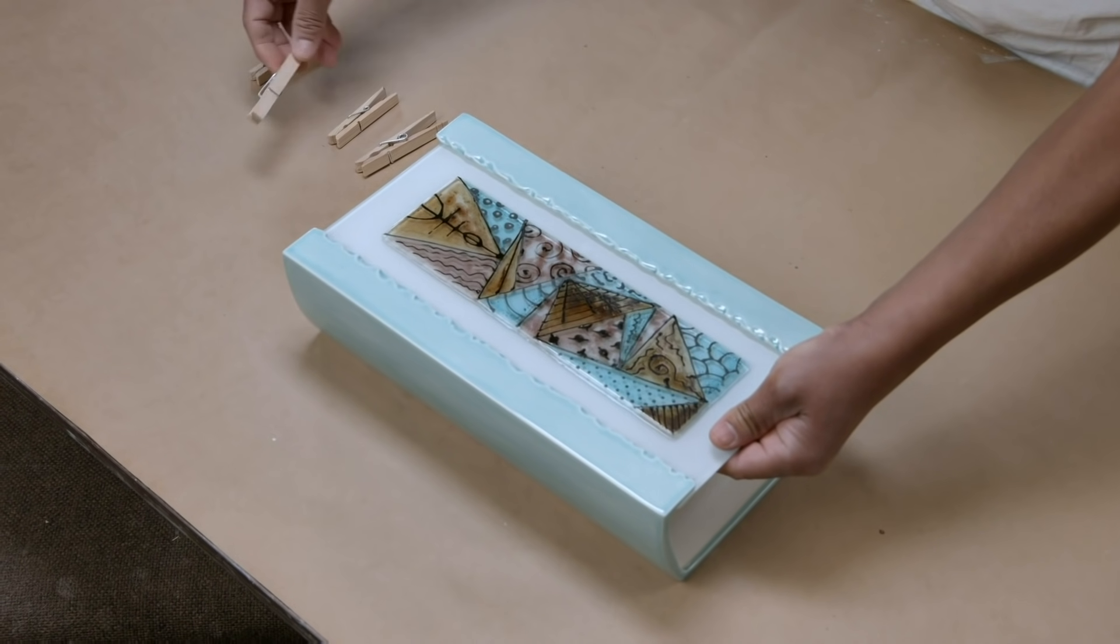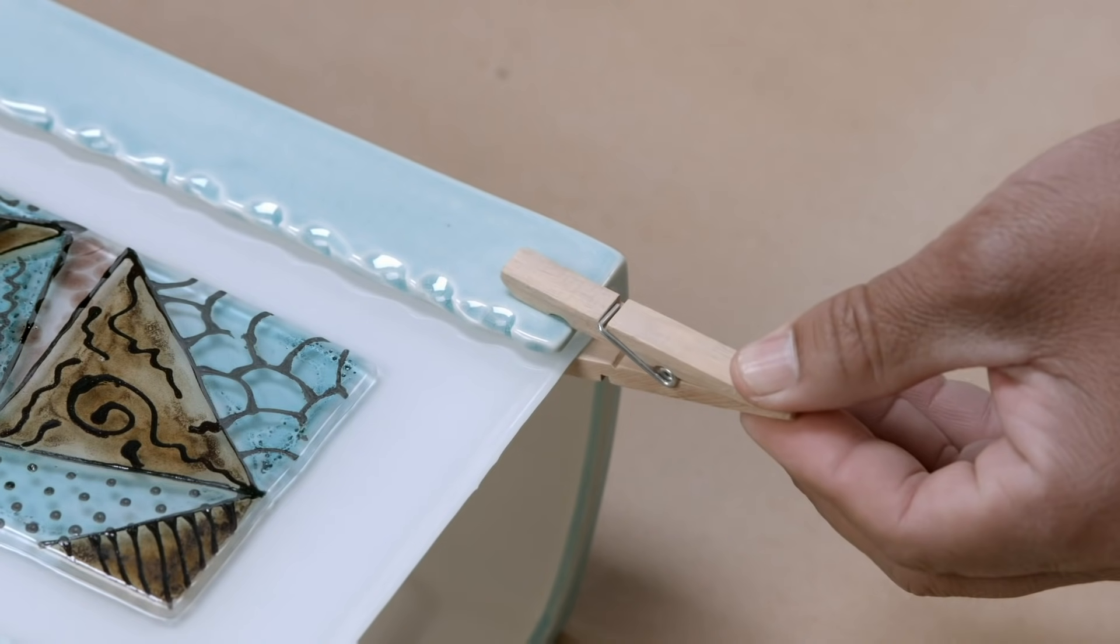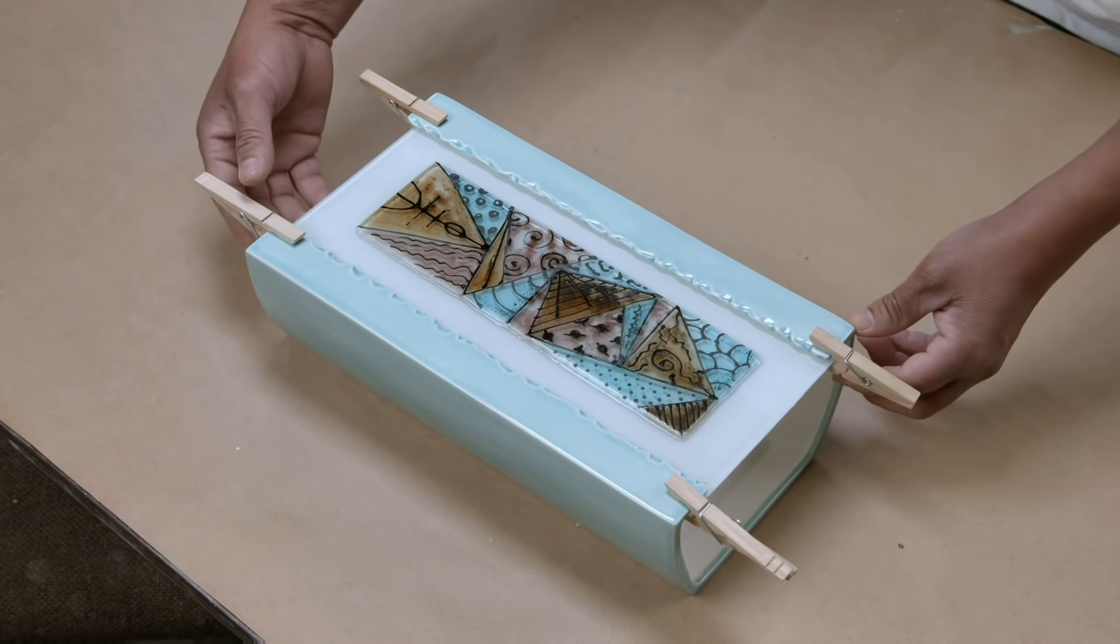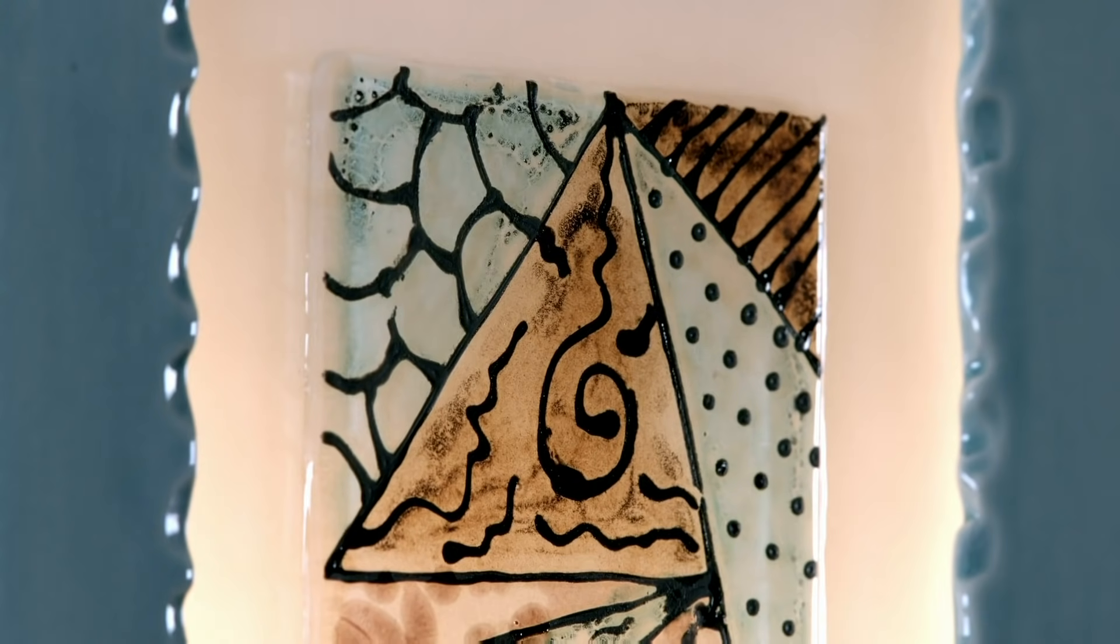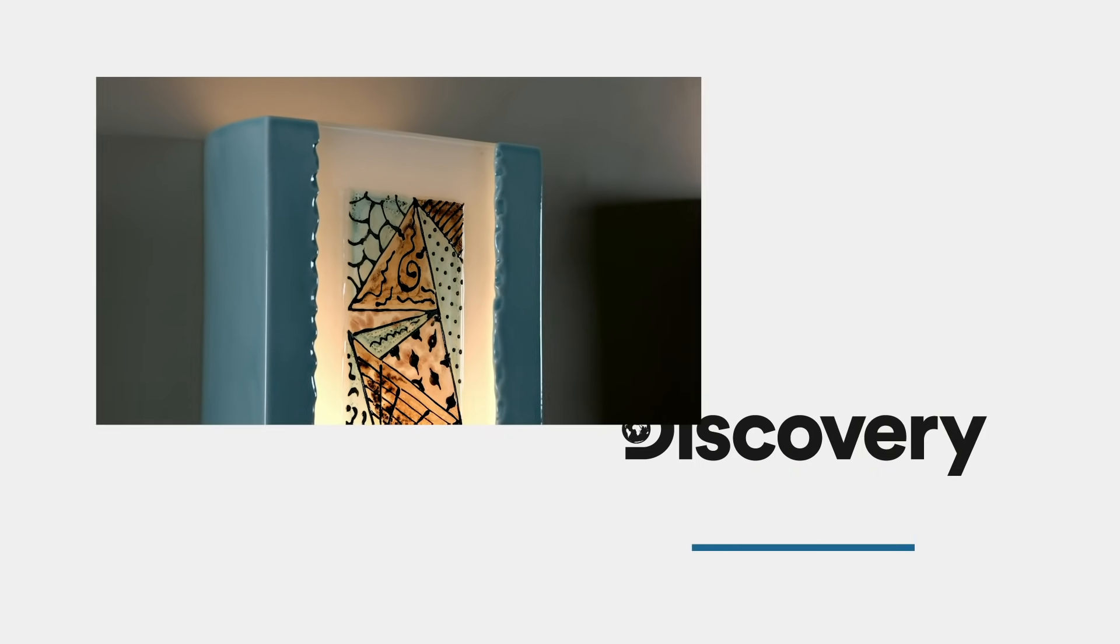Pegs are used to hold the pane in place while the adhesive cures overnight. The next day, the art glass sconce is ready to light up your life.